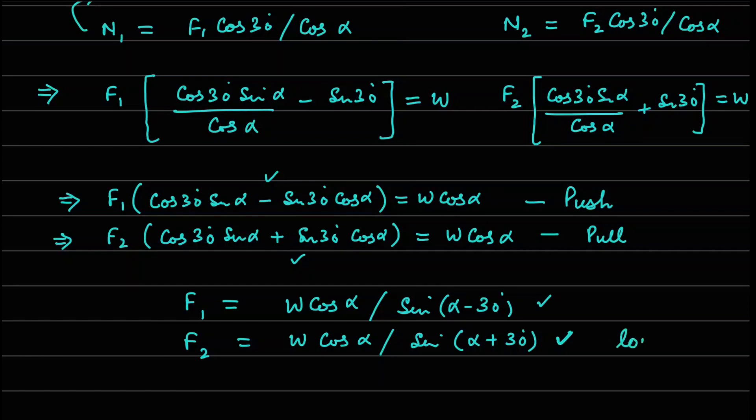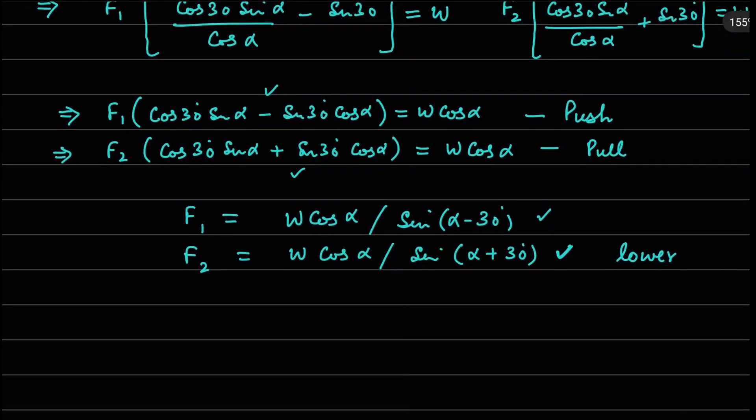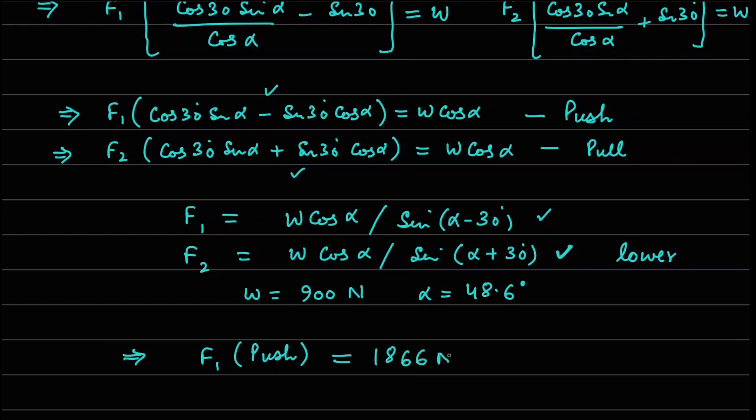When you substitute the value of W which is 900 newtons - W is given as 900 newtons - and alpha we have calculated as 48.6 degrees, when you substitute these two numbers, your F1 which is your pushing force to just roll this roller comes out as 1866 newton approximately. And similarly your F2 for the pull case comes out a much lower number which is 607 newtons. So intuitively also we can see this: that pulling something is easier than pushing something. That's why the force is coming lower in this case.